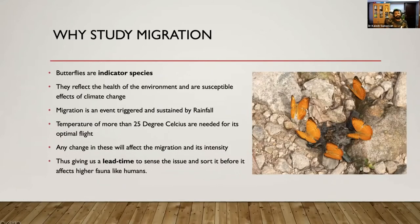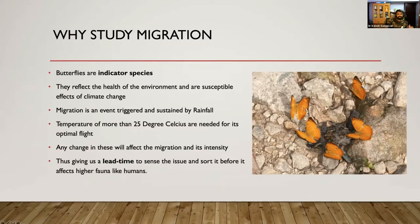Why should we study migration? The answer is the same as why we should study butterflies — these are indicator species. They reflect the health of the environment and are susceptible to even minute changes in climate. Migration is triggered by sustained rainfall and a temperature of at least 25 degrees Celsius is needed for butterfly activity. Any environmental or climate change will adversely affect this. By studying them, we get a lead time to sense the issue and address it before it affects higher life forms like humans.